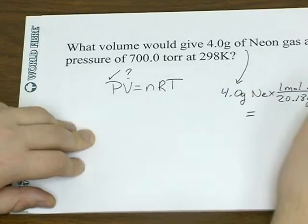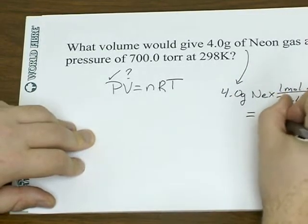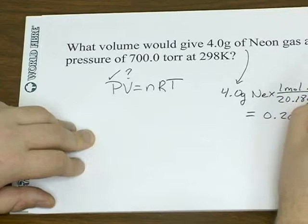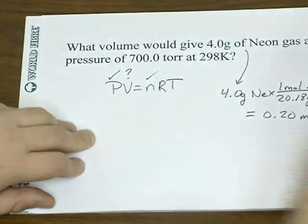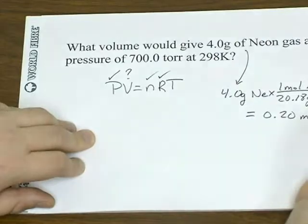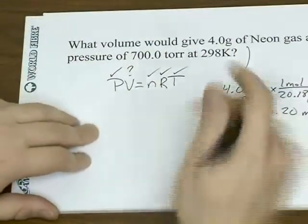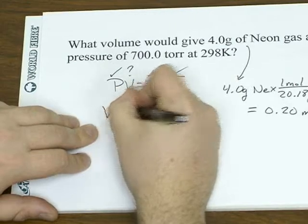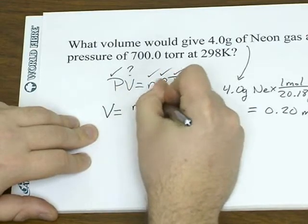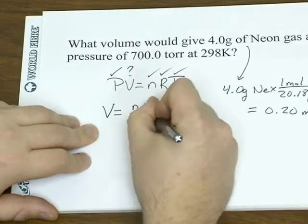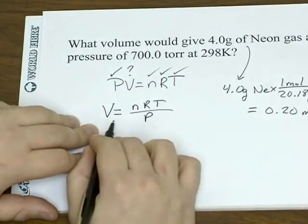Doing a quick gram to mole calculation, you see that 4.0 grams of neon is about 0.20 moles. So we do have the moles, R is a constant, and we're given a temperature. It looks like we should be able to plug those four things into this equation and solve for the volume.